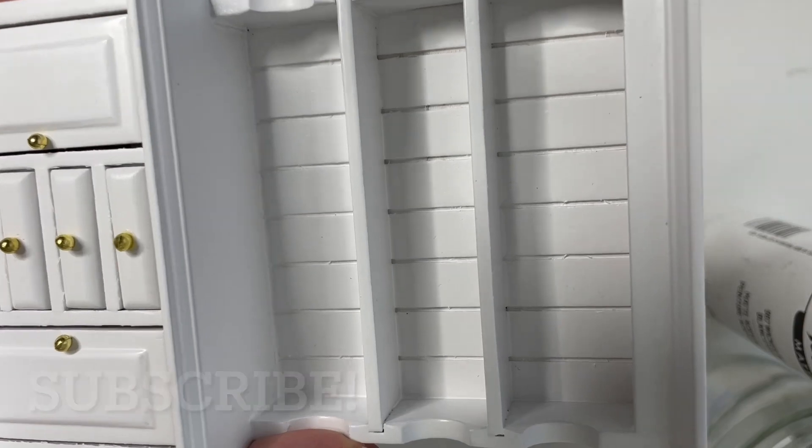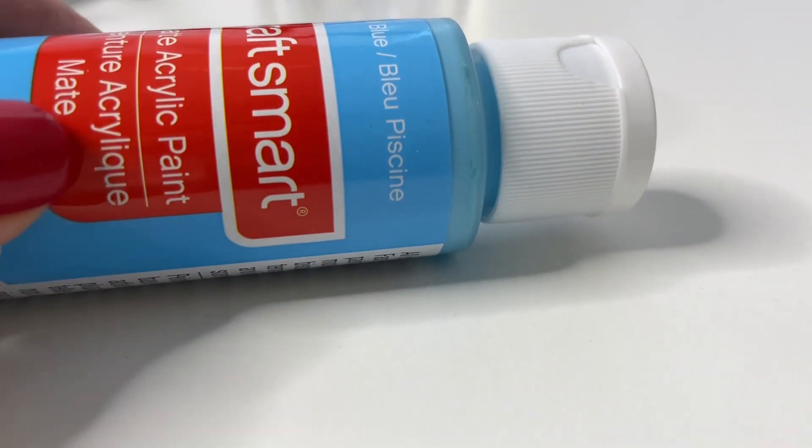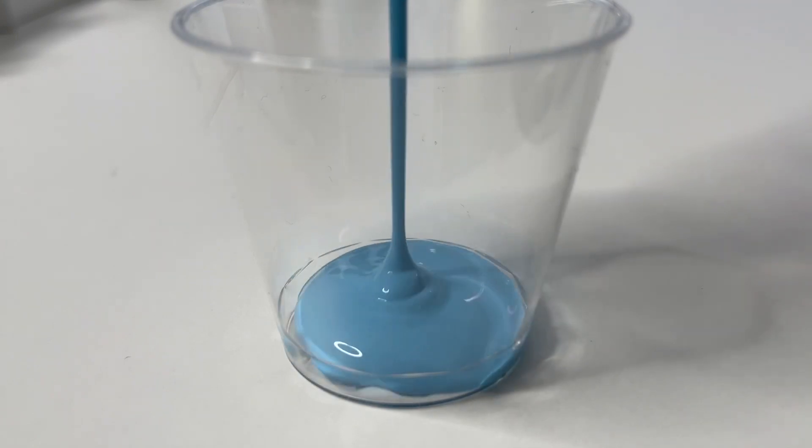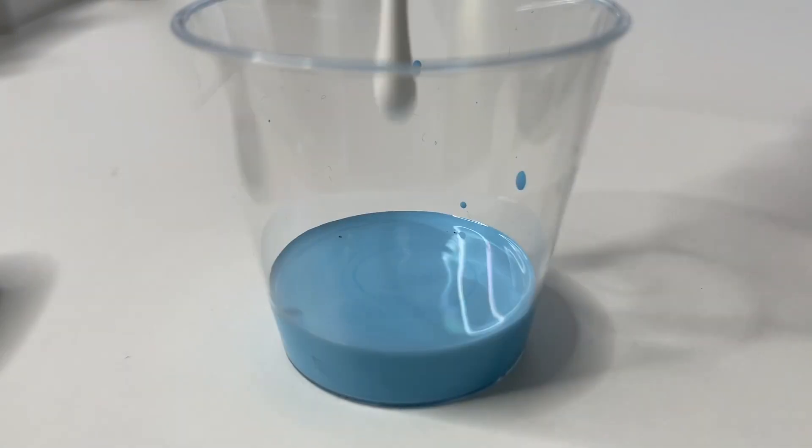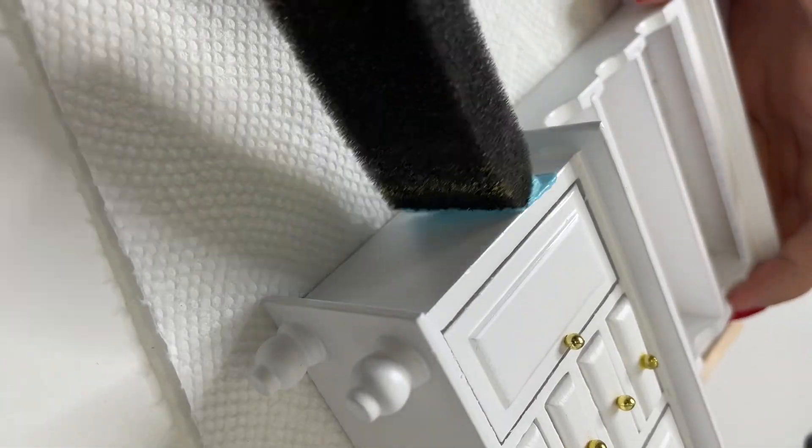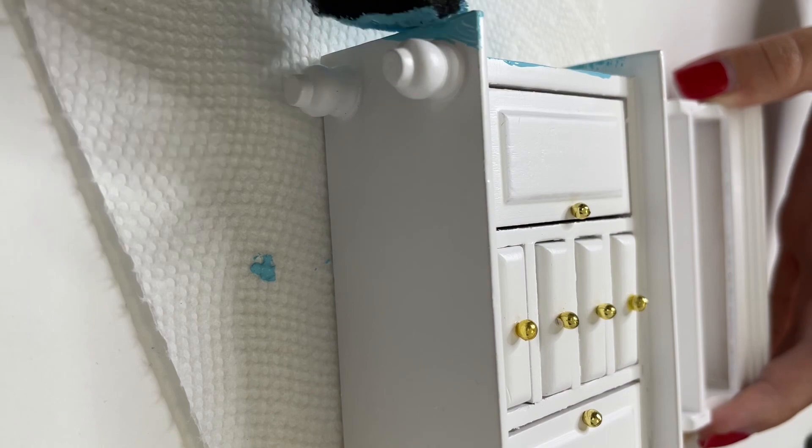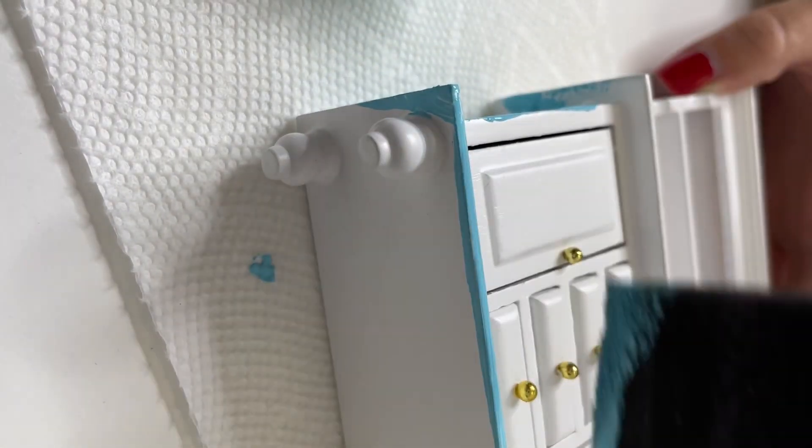I'm going to use this white miniature dollhouse cabinet and then I'm going to paint it over with some blue paint. And I'm going to mix together some different colors to get the exact blue that I want. And now I'm going to paint the cabinet with two layers of paint with some time to dry in between each layer.